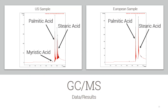Next, the GC-MS data. The chart on the left shows the U.S. sample, while the chart on the right shows the European sample. Both contain stearic and palmitic acids, but the U.S. sample also contains a small amount of myristic acid.